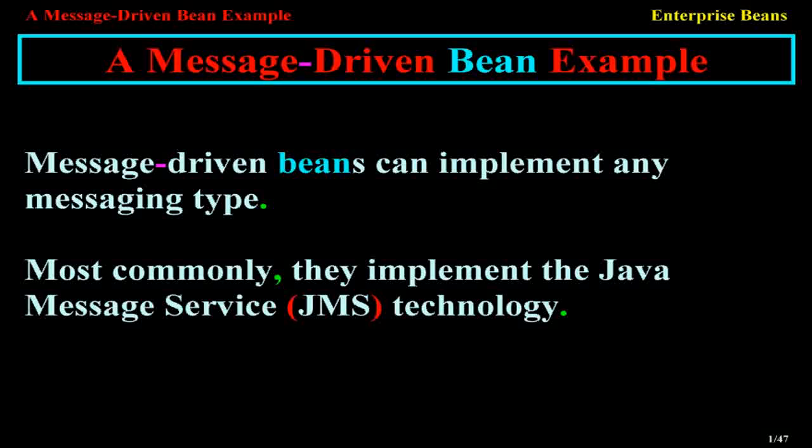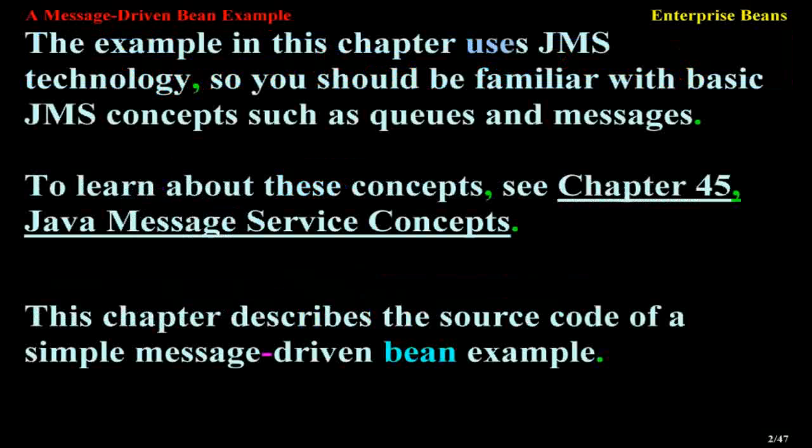A message-driven bean example. Message-driven beans can implement any messaging type. Most commonly, they implement the Java Message Service (JMS) technology. The example in this chapter uses JMS technology, so you should be familiar with basic JMS concepts such as queues and messages. To learn about these concepts, see Chapter 45, Java Message Service Concepts.